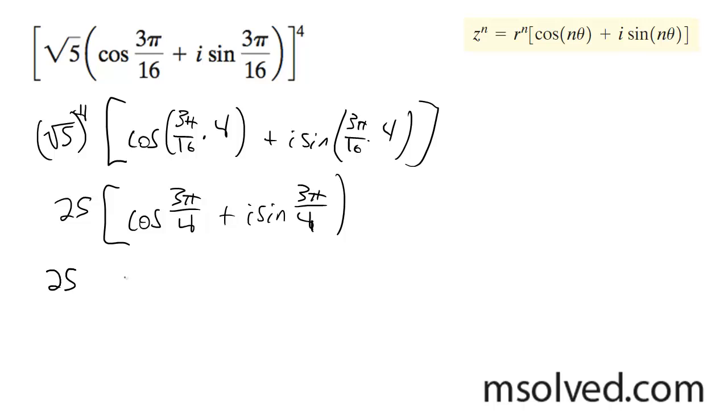So 25, cosine of 3π over 4 is equal to negative root 2 over 2, and sine of that is equal to root 2 over 2i. So you go ahead and distribute this.